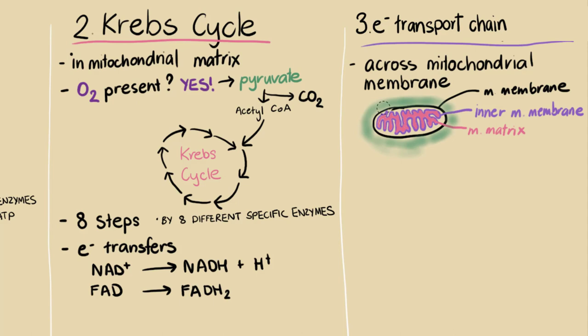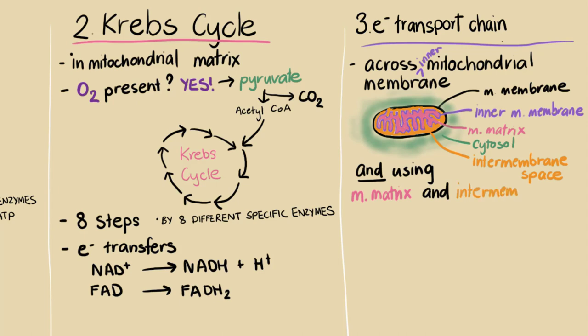Now I'm also going to draw in another part that we haven't mentioned, which is the intermembrane space. This is the space between the mitochondrial membrane and the inner mitochondrial membrane, and it's quite important for the electron transport chain. So to be more precise, the electron transport chain occurs across the inner mitochondrial membrane and using the mitochondrial matrix and the intermembrane space. It's just more of a mouthful.